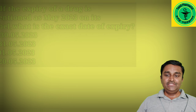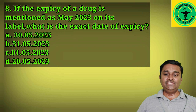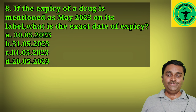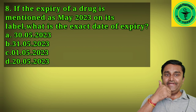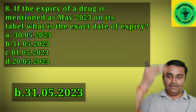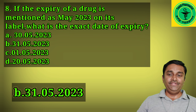Eighth question: if the expiry of a drug is mentioned as May 2023 on the label, what is the exact day of expiry? Since May has 31 days, the exact expiry date is 31-05-2023.